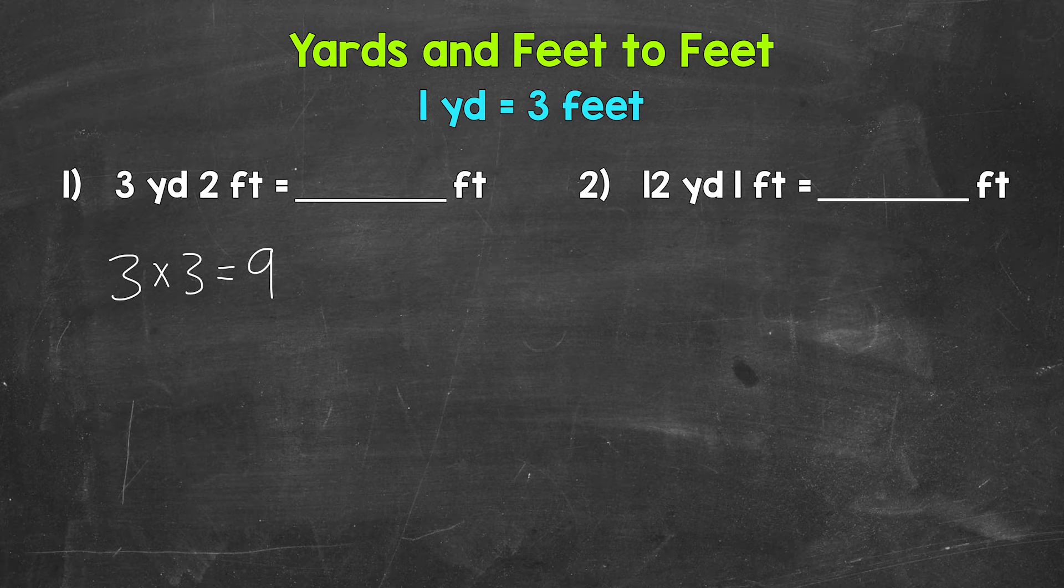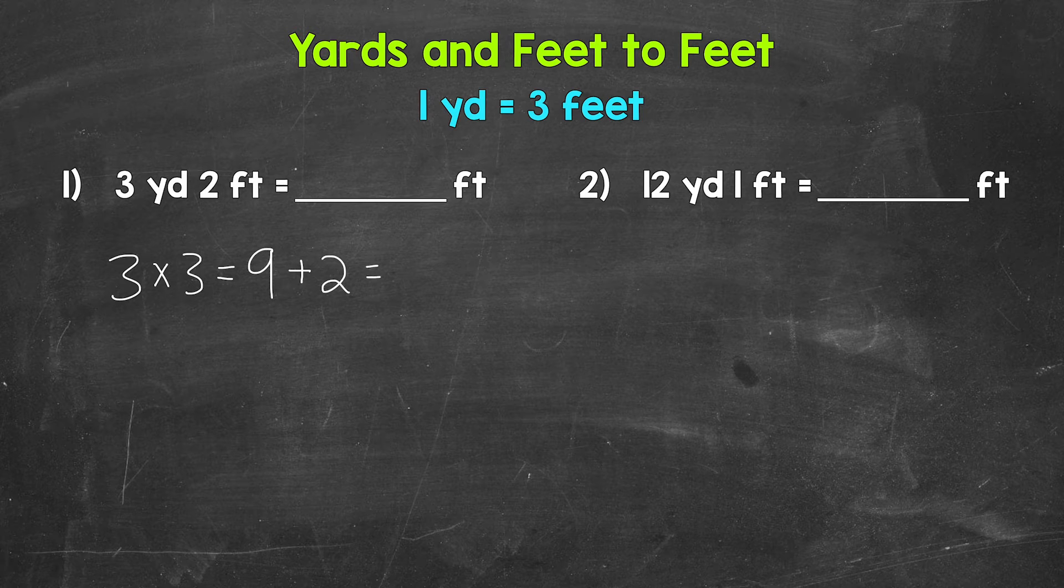Now we add the two feet to that. So we're combining our nine feet and two feet to see how many total feet we have. Nine feet plus two feet gives us eleven feet. Three yards two feet equals eleven feet.